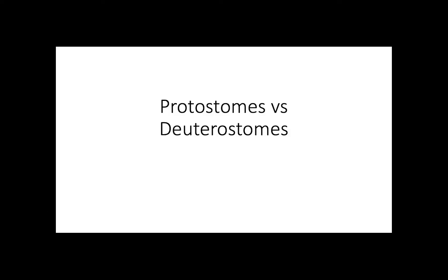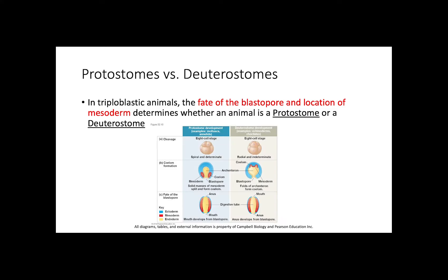In this video, we will be discussing the differences between protostomes and deuterostomes. In triploblastic animals, the fate of the blastopore and the location of the mesoderm determines whether or not an animal is a protostome or a deuterostome.